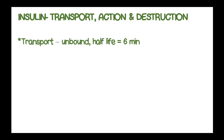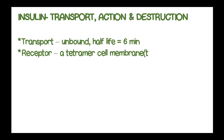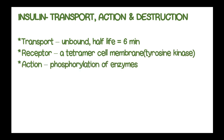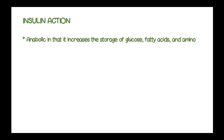Transport of insulin is done in an unbound form and insulin has a half-life of six minutes. The insulin receptor is known as a tetrameric cell membrane tyrosine kinase and acts by phosphorylation of enzymes. Insulin is degraded by the insulinase enzyme. Insulin is an anabolic hormone and its anabolic activity acts by increasing the storage of glucose, fatty acids, and amino acids. Therefore, it is known as the hormone of abundance.